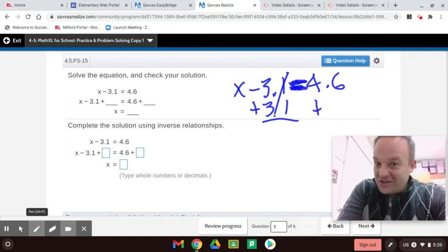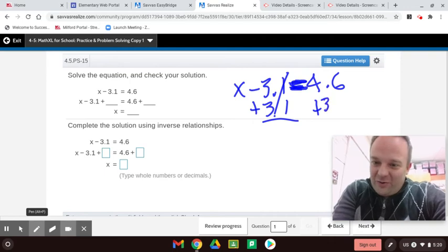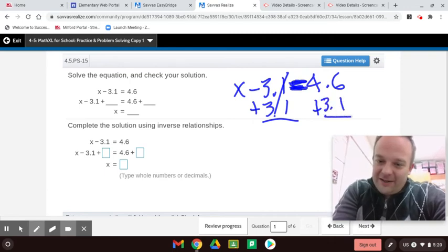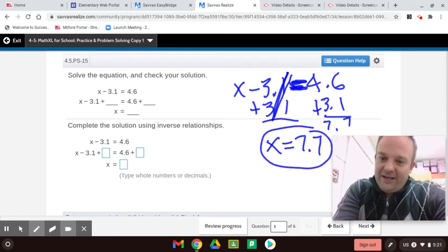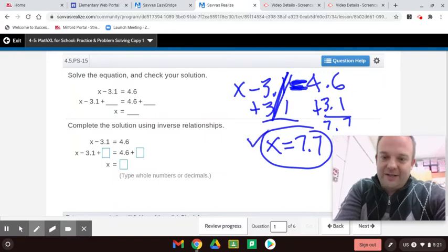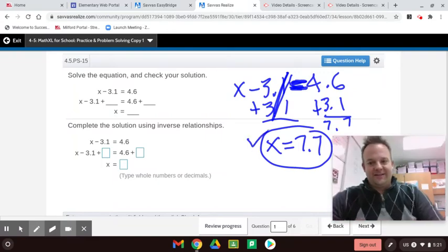So I add 3.1 here. Now look, this canceled out to 0, right? So now you have x all by itself equals, this is 7 and 7. So equals 7.7. And then you want to check it. 7.7 minus 3.1 equals 4.6. So that checks. And then you put a checkmark. That's how I did it as a kid.